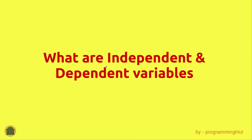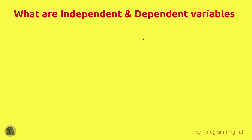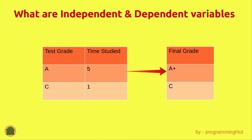Before starting, I want to teach you what independent and dependent variables are, because we are going to use them in this video. Let's take an example of this dataset based on student performance. On the left side you have a table of test grade and time that the student studied, and on the right side we have the student's final exam grade. The final grade is somehow dependent on the time studied and the previous test grades.